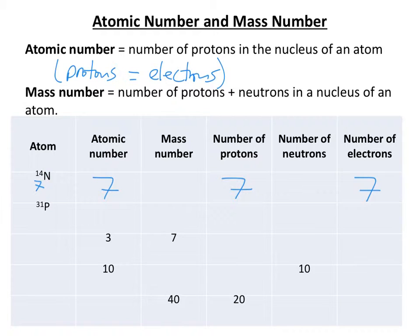Now, the larger of the two numbers next to the atom tells us the mass number. So that number there, 14, tells us that we've got, well, the sum of protons plus neutrons is 14. Now, bearing in mind we have 7 protons, that means we must have 7 neutrons as well. 7 plus 7 is 14. So that's the first one done.